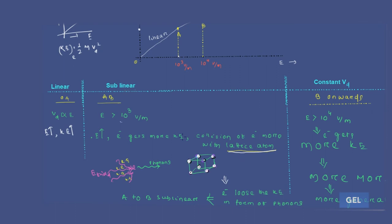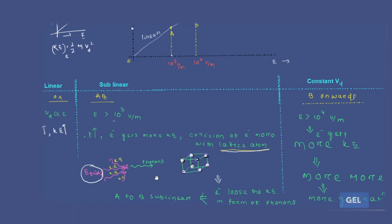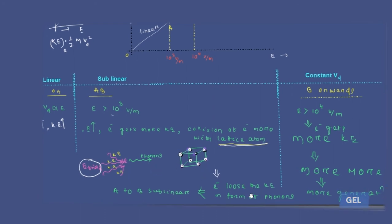Collision of electrons with lattice atoms becomes maximum. This is a very important point. With increase in electric field, kinetic energy is continuously given to the electrons, causing them to collide with lattice atoms. Due to these collisions, phonons are generated — phonons mean heat energy — so the electrons lose kinetic energy as heat energy.